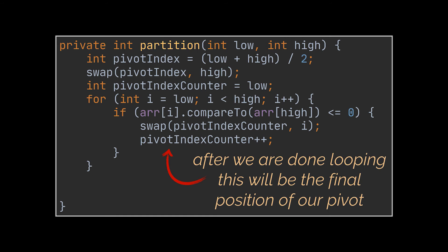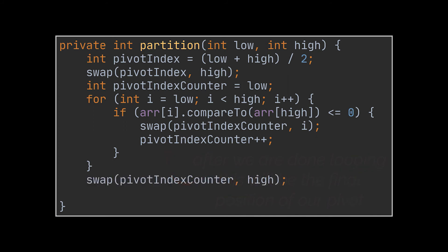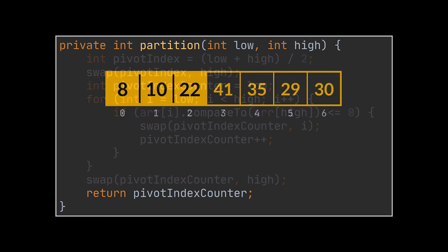After looping over all the elements, this counter will be standing over the first element that is bigger than the pivot, which is the rightful and final place of our pivot in the sorted array. Therefore, we swap the pivot located at index high with the element referenced by this counter. The partition method should return the location of the pivot, so we return the pivot counter variable, as this is the final index of the pivot.